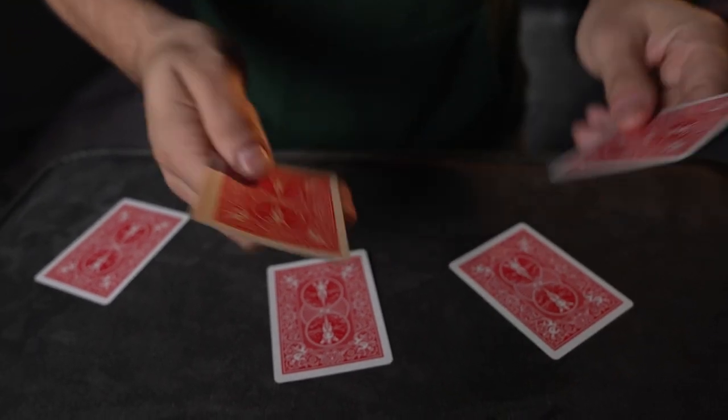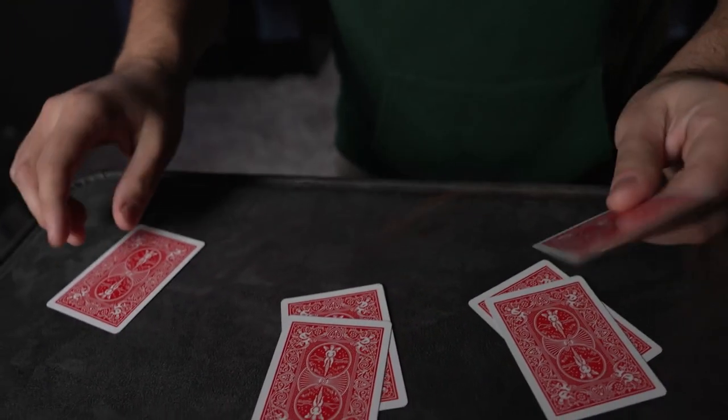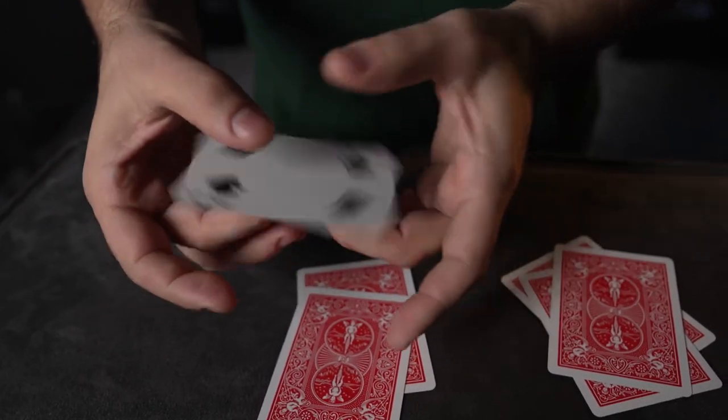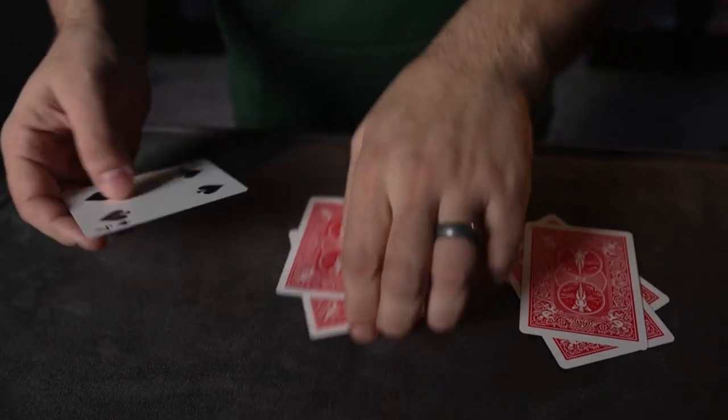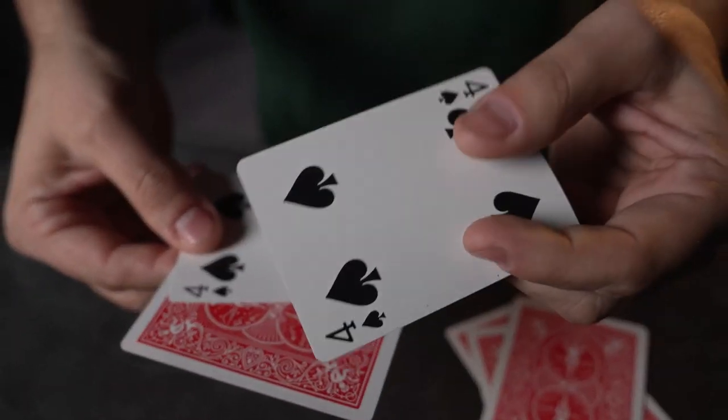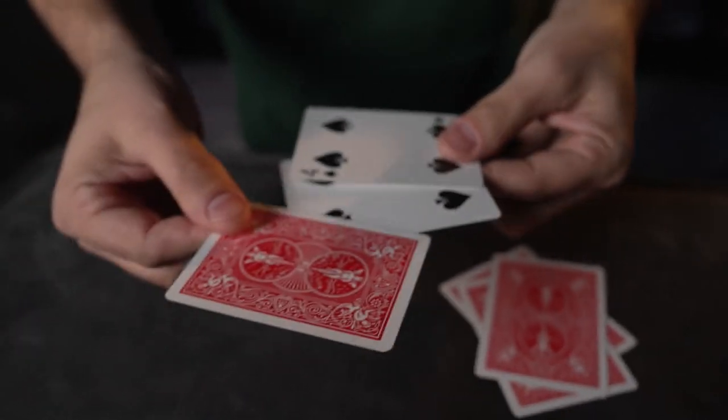...in reality these can absorb the identity of any other card. In this case, the four of spades. Watch what happens when it just goes near that blank card. Well I shouldn't say a blank card, I should say the specially absorbing card...